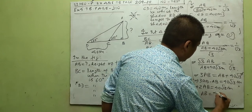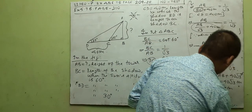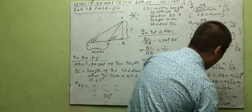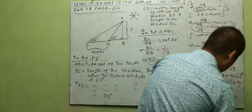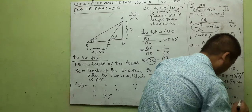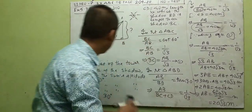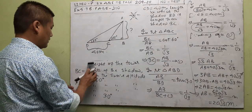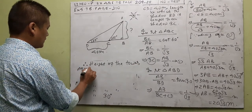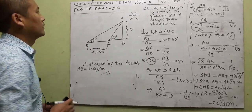Therefore AB equals 40 root 3 divided by 2 equals 20 root 3 meters. That is the height of the tower — 20 root 3 meters. Therefore the height of the tower, which is AB, equals 20 root 3 meters. That's the answer for Example 5. One more example before we close this video.